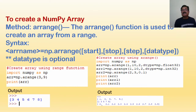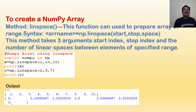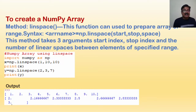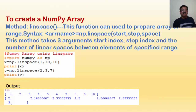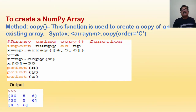The linspace method can be used to prepare an array of any range. The syntax is np.linspace(start, stop, num), where you give a starting point and ending point and specify how many evenly spaced values to generate. For example, np.linspace(1, 10, 10) produces ten values from 1 to 10, and np.linspace(2, 3, 7) produces seven values between 2 and 3 as float values — Python dynamically creates floating point values. The copy method is used to create a copy of an existing array.